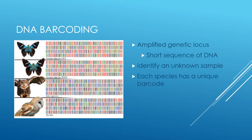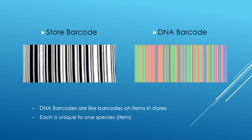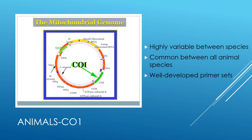DNA barcoding is using a short sequence of DNA, called a barcode, to identify an unknown sample. The idea is that, just as all items in a store have a unique barcode, so do all species. This concept is extremely successful for animal species. All animals contain the CO1 locus, or cytochrome C oxidase subunit 1, which codes for mitochondrial protein. The sequence of this locus has enough variation between different species that every species' sequence is unique, making it ideal to isolate as a barcode.